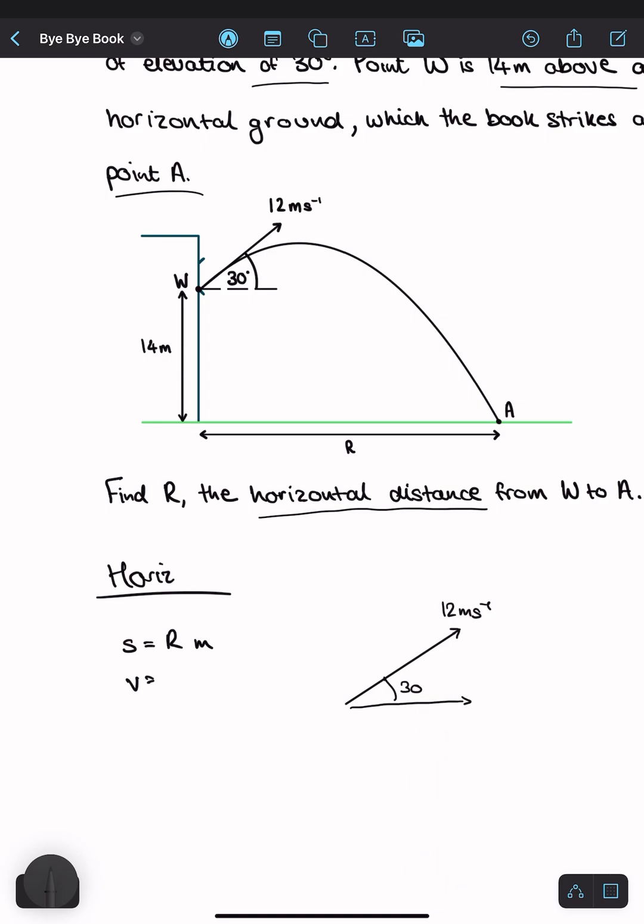This is the horizontal speed. So we can use trig and see that this speed is 12 cos 30 because it's adjacent. So this is 12 cos 30, which is equal to 6 root 3 meters per second.